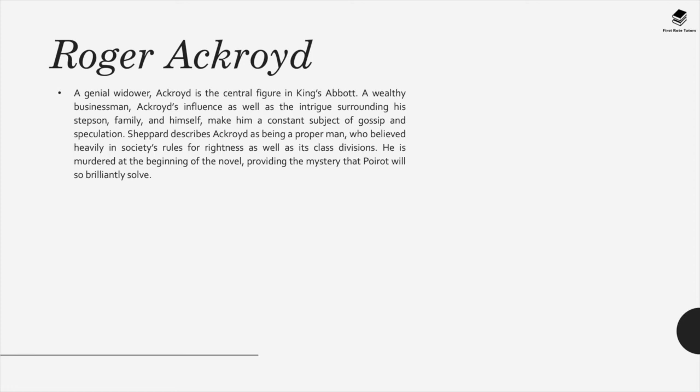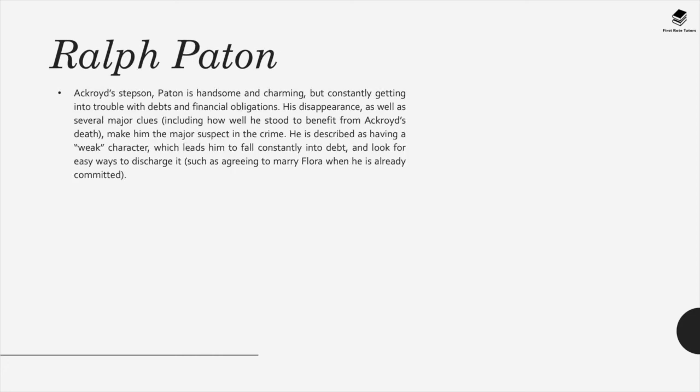Shepard describes Ackroyd as being a proper man who believed heavily in society's rules for rightness as well as its class divisions. He is murdered at the beginning of the novel, providing the mystery that Poirot will so brilliantly solve. Ralph Patton, Ackroyd's stepson, is handsome and charming but constantly getting into trouble with debts and financial obligations. His disappearance, as well as several major clues, make him the major suspect in the crime. He is described as having a weak character, which leads him to fall constantly into debt and look for easy ways to discharge it.